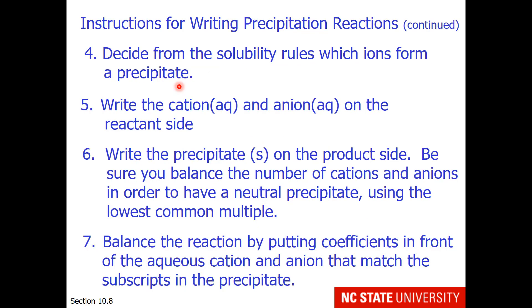For the combinations that are left, decide from the solubility rules which ions form a precipitate. Write the cation as an aqueous material and anion as an aqueous material on the reactant side. Write the precipitate as a solid material on the product side.